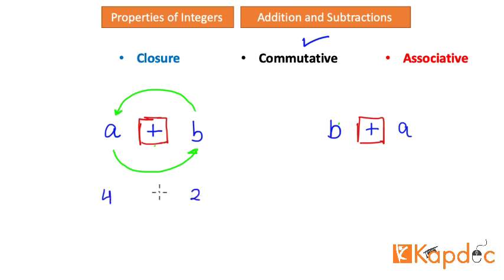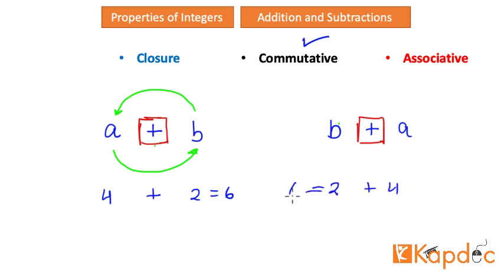Let us prove this with examples. Take four and two being added — it results in six. If instead we take two first and add four to it, it is still six. There is no difference between these two statements; these two results are equal.